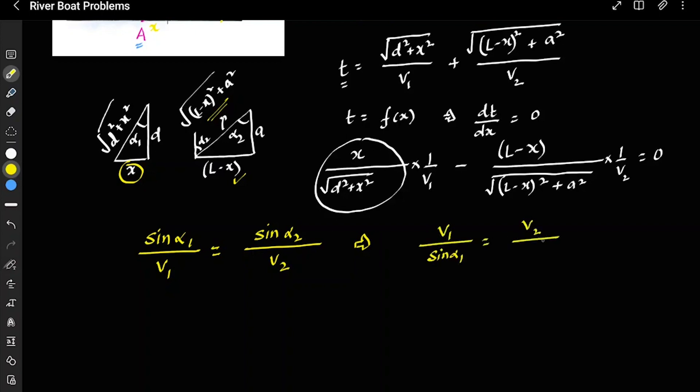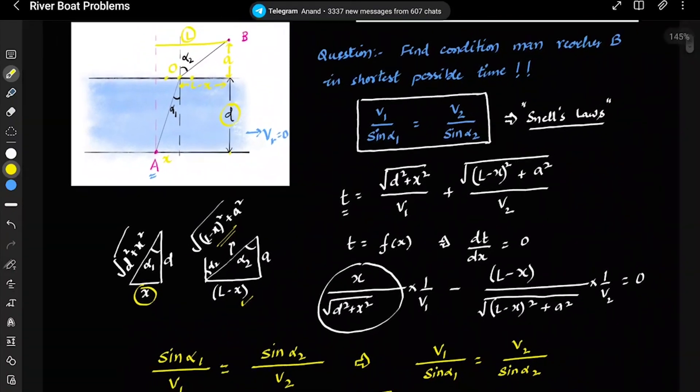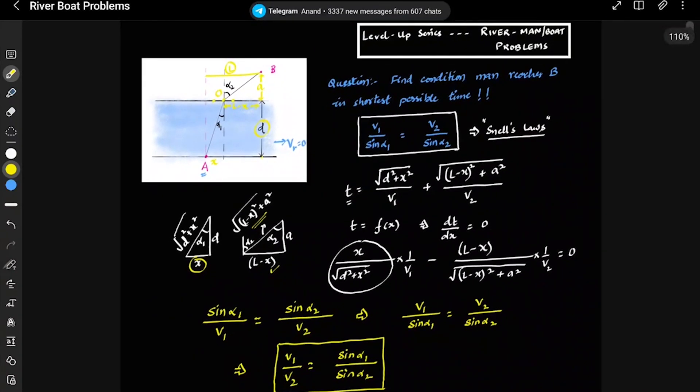And therefore we get the famous Snell's law, which states that V1 upon sin alpha 1 is equal to V2 upon sin alpha 2, or I can say that V1 upon V2 is equal to sin alpha 1 upon sin alpha 2. And here is our result. So clearly you can see that if you know one concept of physics, you can apply it to anywhere.